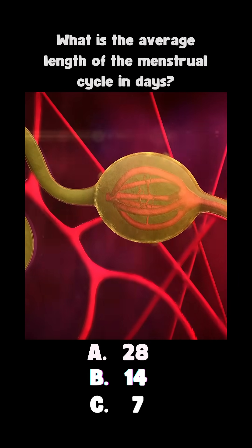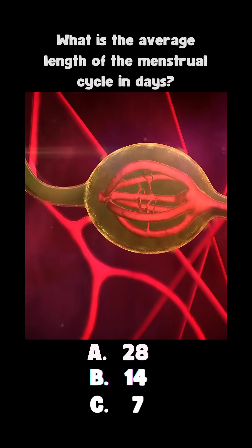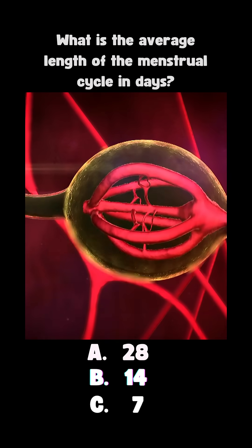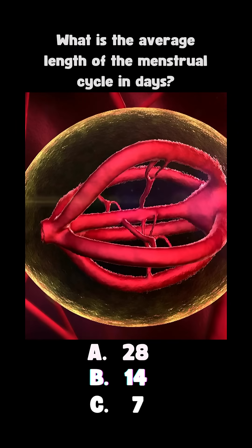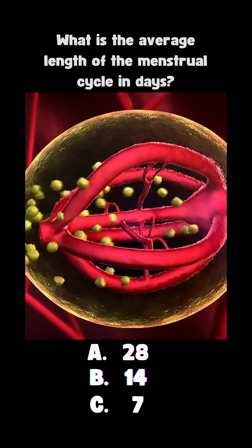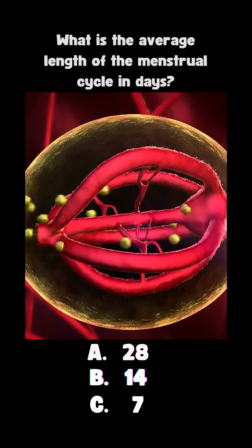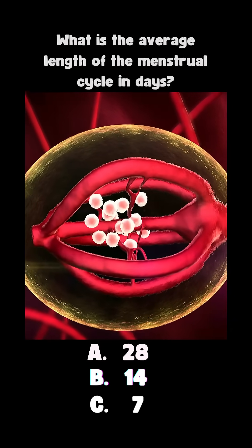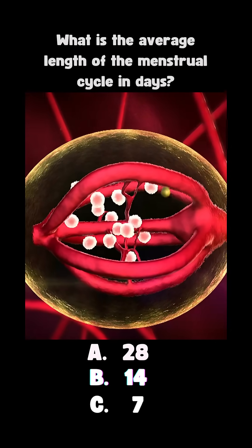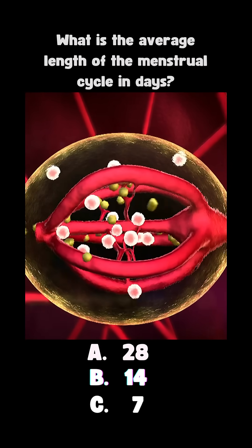What is the average length of the menstrual cycle in days? 28.